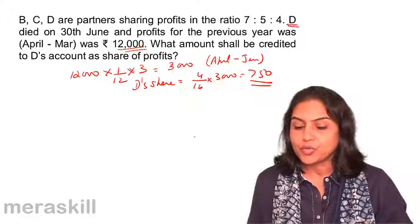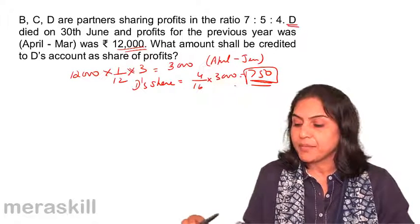So, what should be credited to D's account as share of profit? It should be an amount of Rs. 750.